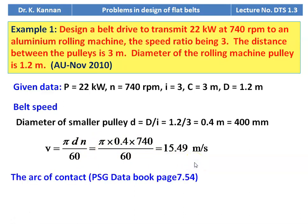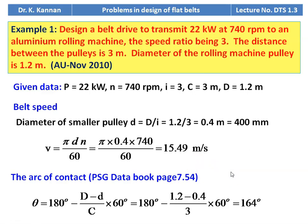Next, we calculate the arc of contact. Referring to page number 7.54 for the equation: θ = 180 − [(D − d) / C] × 60 degrees = 180 − [(1.2 − 0.4) / 3] × 60 = 164 degrees. The arc of contact on the smaller pulley is 164 degrees.